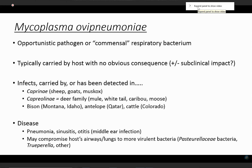Just a very brief amount of information on what this bacterium is. It's an opportunistic pathogen, or rather a commensal bacterium of the respiratory tract. It is typically carried by hosts with no obvious consequence. There is some indication, though, that particularly in domestic sheep, there can be subclinical impacts — more of a subclinical pneumonia that this organism can cause.